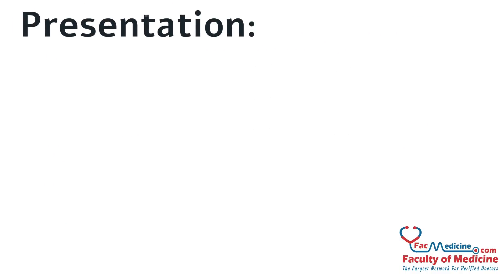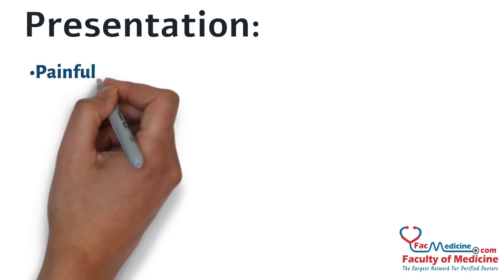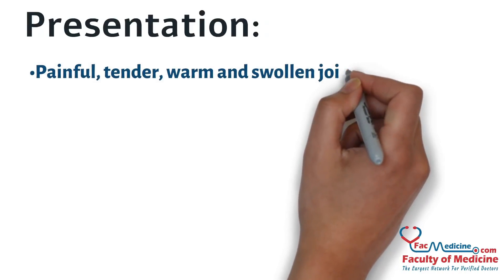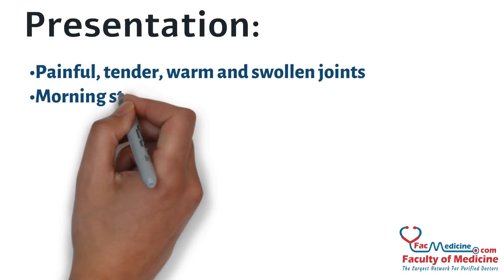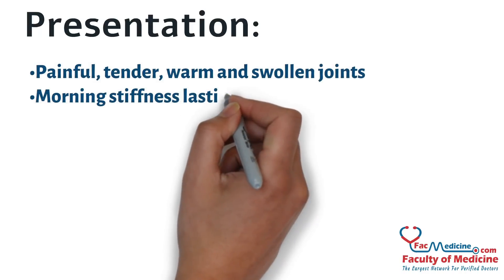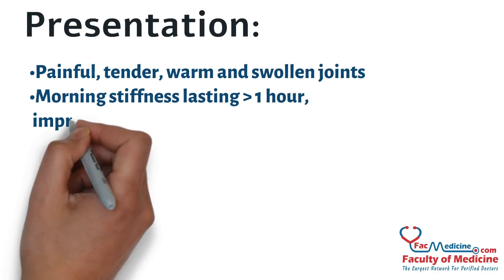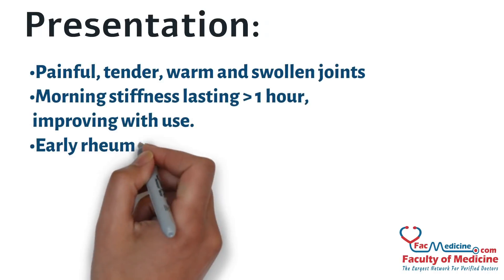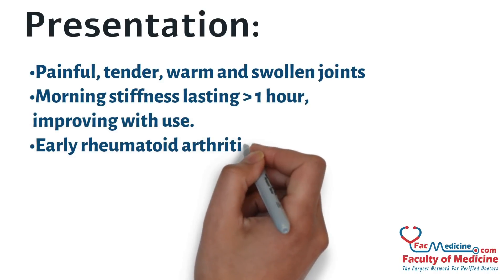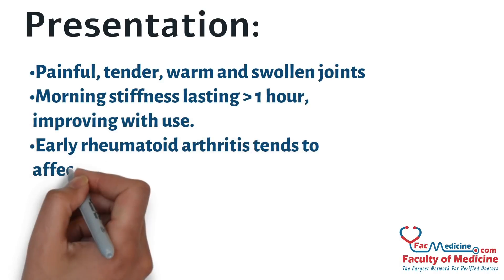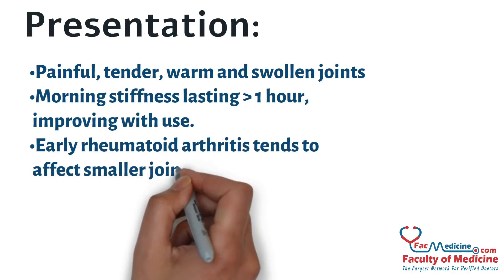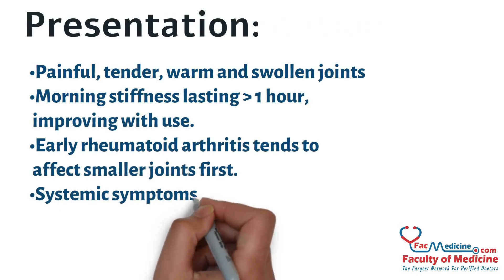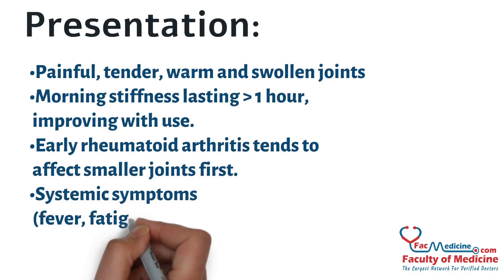Presentation: Painful, tender, warm and swollen joints. Morning stiffness lasting more than one hour, improving with use. Early rheumatoid arthritis tends to affect smaller joints first.